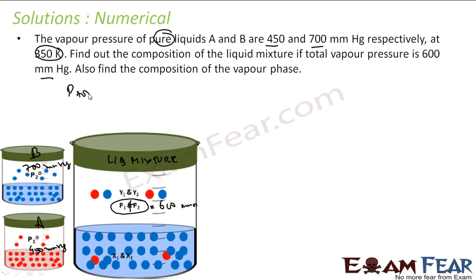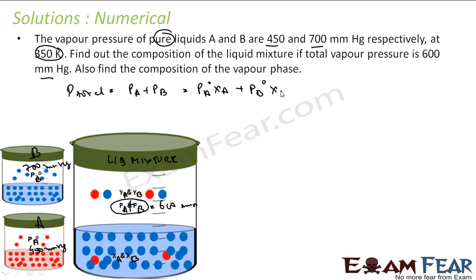Let PA° and PB° be the vapor pressures of pure A and B, and let PA and PB be the partial pressures, and XA, XB be the mole fractions in the liquid phase. Then by Raoult's law, P_total = PA + PB = PA°·XA + PB°·XB.